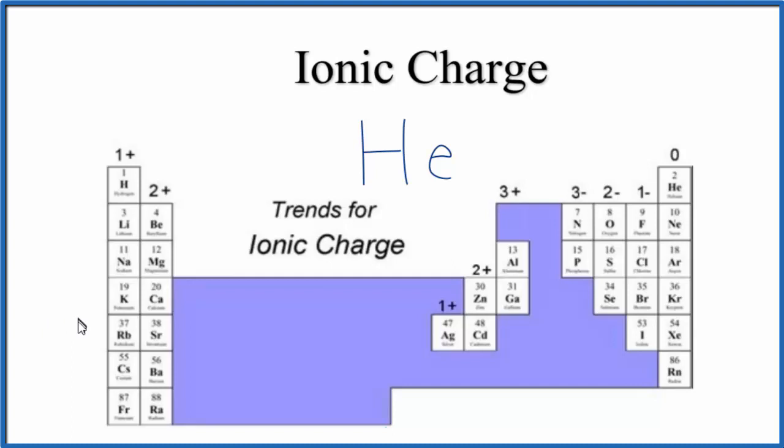So there are trends on the periodic table, and one of the trends is for ionic charge. Group 1, that has a 1+. Group 2, 2+. We skip these transition metals, except a few in the post-transition metals here. And then we go down to 3-, 2-, 1-, and then 0.